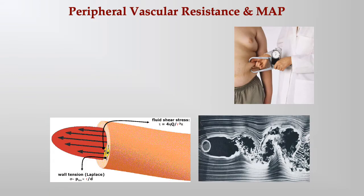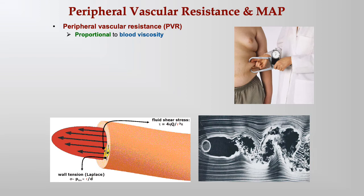Peripheral vascular resistance, PVR, is proportional to blood viscosity. Resistance is what interferes with the movement of blood. The thicker your blood is, the harder it is to push along — imagine water versus maple syrup flowing through a pipe. The thicker your blood, the higher your blood pressure.